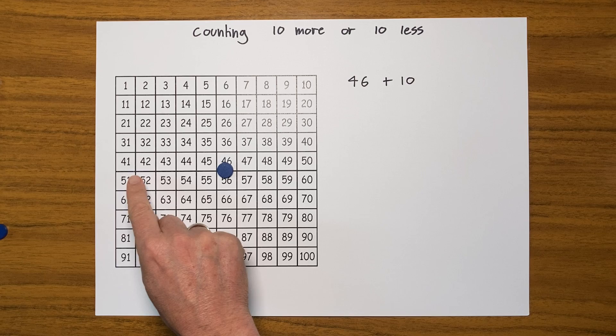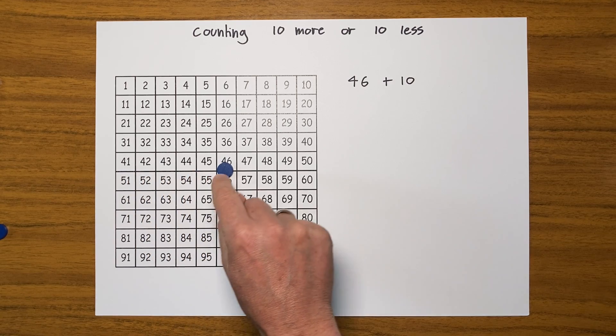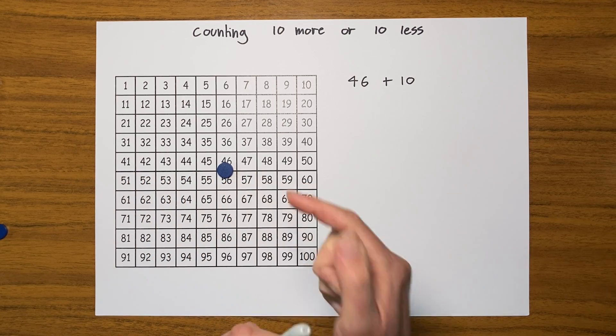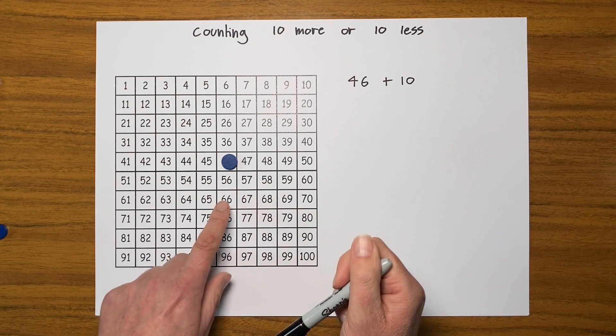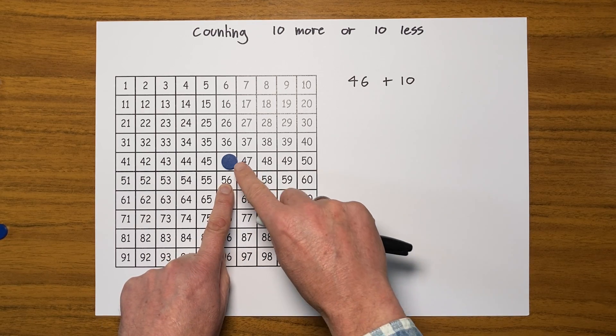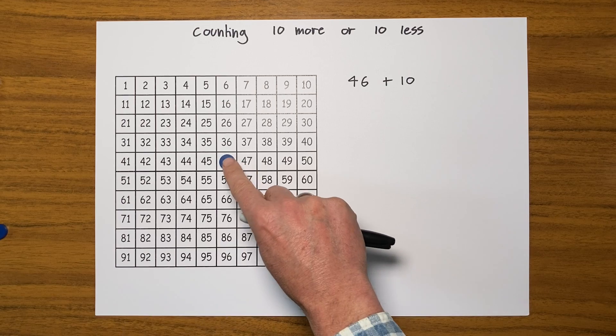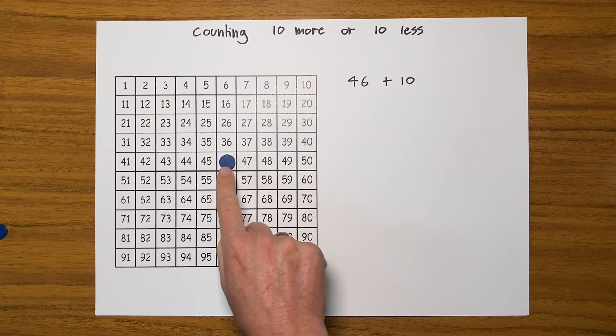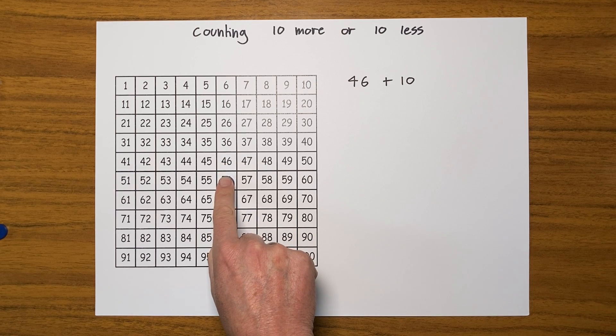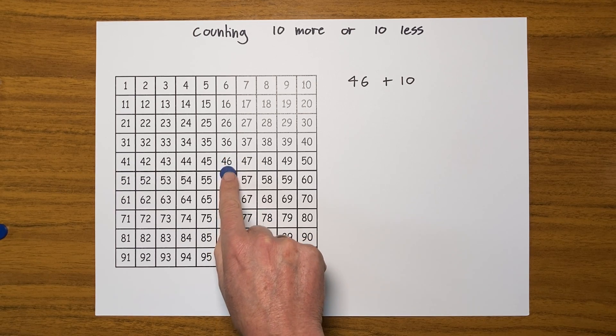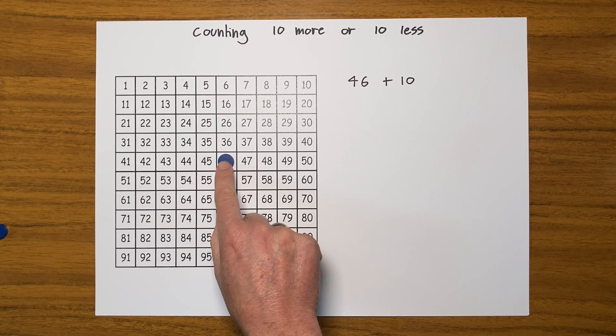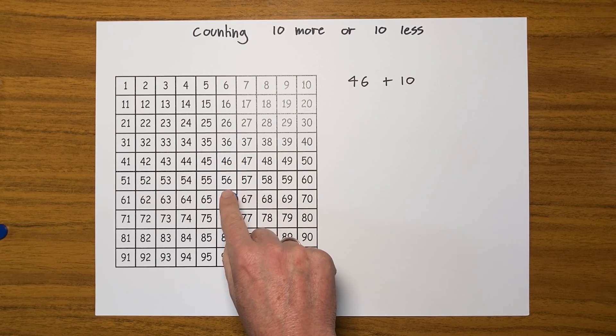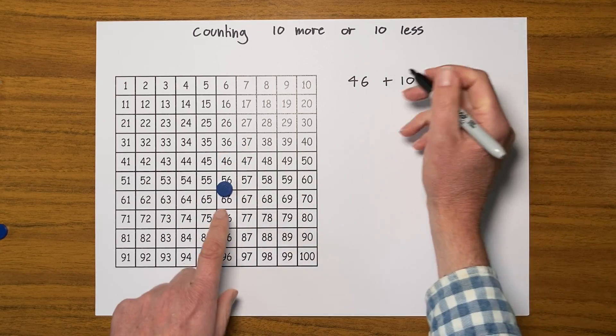To give me 56. So I ended up here - well look where that is, it's just below where I put my counter. So what I can do instead of counting on 10 is just move my counter down 1 on the 100 square to get from 46 to 56.